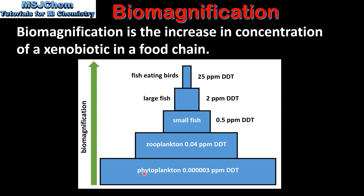The phytoplankton, which are at the bottom of the food chain, have the lowest concentration of DDT, and the fish eating birds, which are at the top of the food chain, have the highest concentration of DDT. This is an example of biomagnification where the concentration of a xenobiotic increases in a food chain.